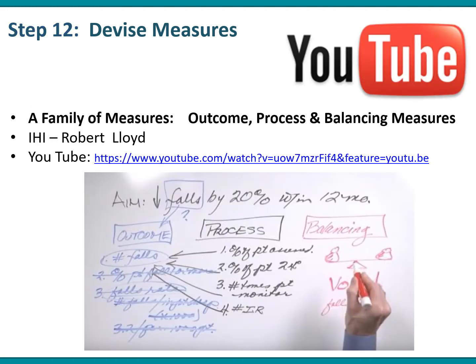This is a really good video that can be watched for a few minutes. It's by Robert Lloyd from the IHI and he describes a family of measures — the outcome, process, and balancing measures.